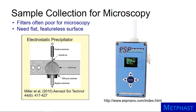There are special collection devices for microscopy. Filters often have complicated structure, making it difficult to identify particles apart from the filter media. Instead, we need flat, featureless surfaces to maximize our ability to see particles with microscopy. One way to achieve this is by electrostatic precipitation.